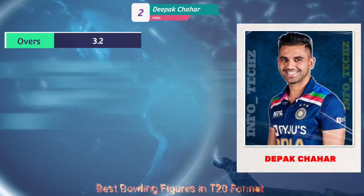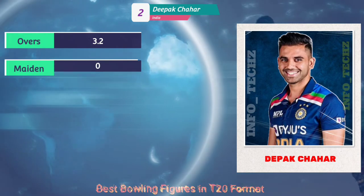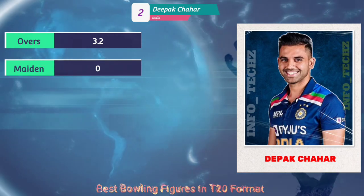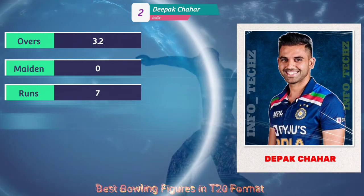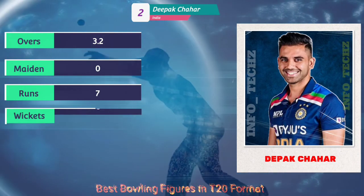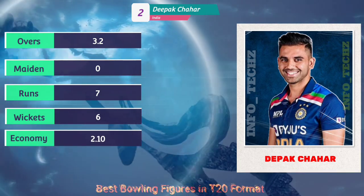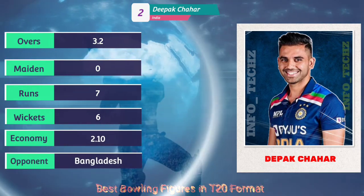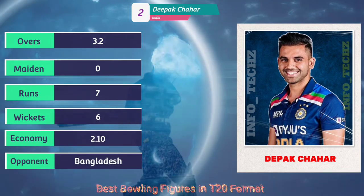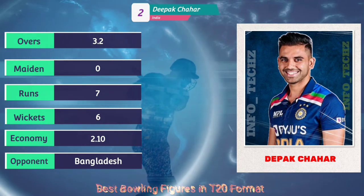At number two, Deepti Sharma from India — 3.2 overs, no maiden, seven runs, six wickets, with an economy of 2.10. The opponent was Bangladesh.